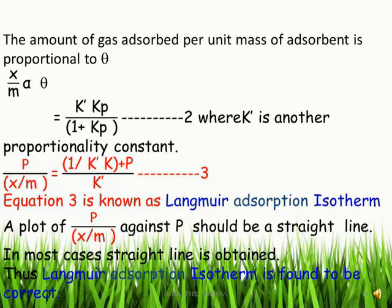The Langmuir adsorption isotherm equation P/(X/M) = 1/(KK') + P/K' is in the form of a straight line (Y = mX + c). A plot of P/(X/M) versus pressure P gives a straight line with intercept 1/(KK') and slope 1/K'. In most cases, a straight line is obtained, confirming that the Langmuir adsorption isotherm is correct.